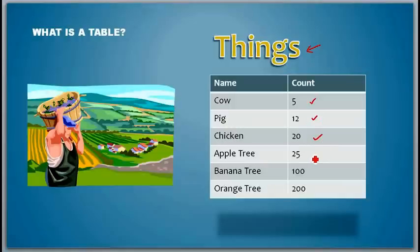And he is also listing the trees that he has, so that he can estimate on the amount of fruits and the type of fruits he can produce, and then he can sell those as well. So he has like 25 apple trees, 100 banana trees, and 200 orange trees.